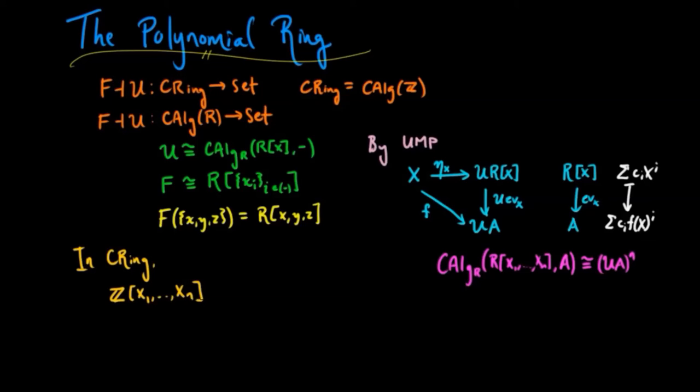which is just the free functor acting on an n-element set, if we quotient out by, say, m polynomials and look at a ring morphism from that ring to A, we can see it's the same as giving A-valued solutions to those polynomials.